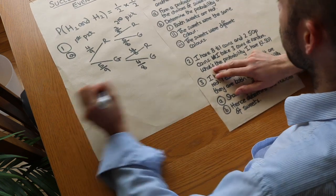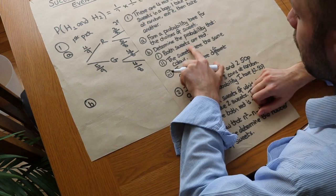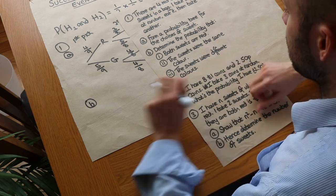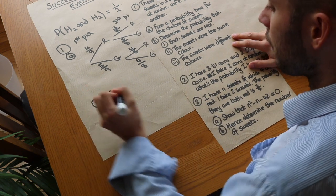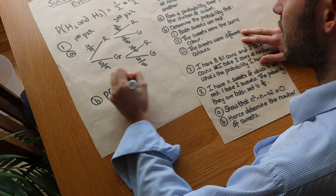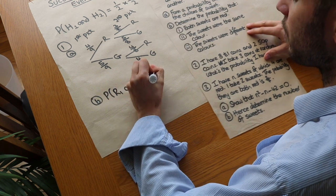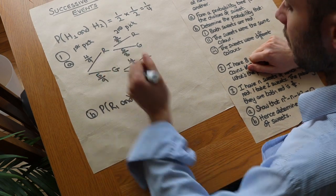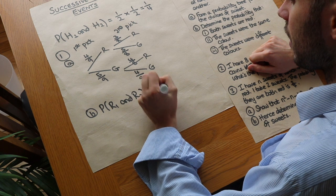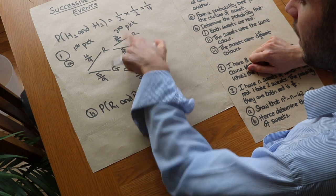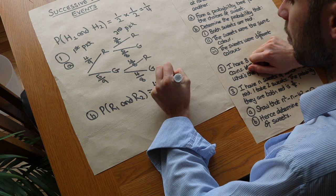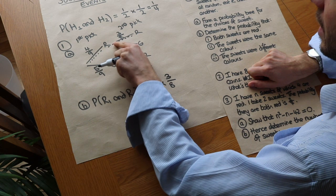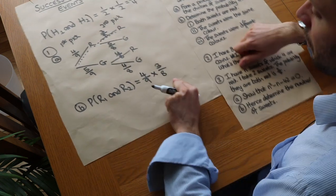For part B, we want the probability that both sweets are red. We want the probability the first sweet is red AND the second sweet is red, so we multiply: four ninths times three eighths. We follow this branch of the tree — first red, then red given the first was red — giving us 12 over 72.